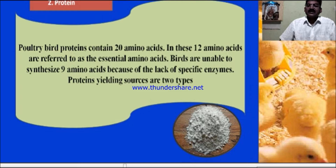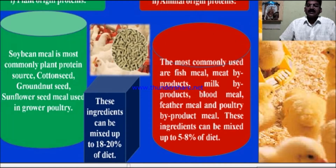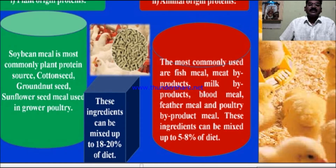Protein-yielding sources are of two types. The first is plant origin protein. Soybean meal is the most commonly used plant protein in poultry farms. Plant proteins also include cotton seed, groundnut seed, and sunflower seed meal. These are used in grower poultry and can be mixed up to 18 to 20 percent of the diet.